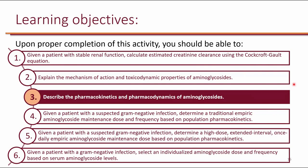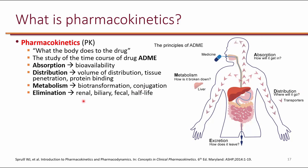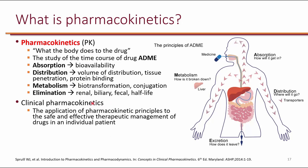Our next learning objective is to describe the pharmacokinetics and pharmacodynamics of aminoglycosides. Pharmacokinetics is what the body does to the drug, involving ADME: absorption, distribution, metabolism, and elimination. It's important to consider absorption for bioavailability, distribution for protein binding, metabolism for CYP enzyme interactions, and elimination for renal, biliary, and fecal clearance. Clinical pharmacokinetics means applying these principles to safe and effective therapeutic management in individual patients, with the goal of enhancing efficacy while decreasing toxicity.